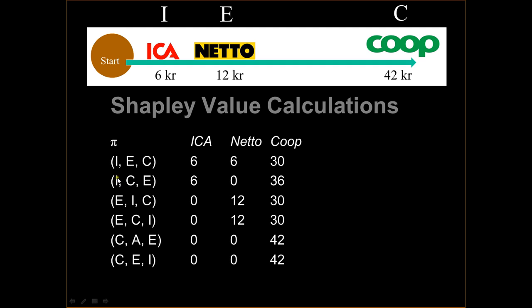If we switch the order: Ika still pays 6. If Coop pays second, they pay 36 — the cost is 42 and Ika already paid 6. If Netto pays first, they pay 12, then Coop pays 30. And if Coop starts paying, they always pay 42 and the other players pay nothing because Coop has already covered the cost. However, none of the actors will accept any single one of these arrangements.